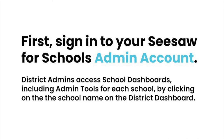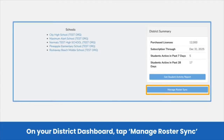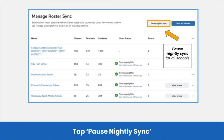Access each school's dashboard by tapping on the school name on your district dashboard. Step 1: Pause your sync district-wide. Pausing your sync in Seesaw ensures your data is not archived or changed before you are ready. Navigate to your Seesaw district dashboard and tap Manage Roster Sync. Tap Pause Nightly Sync to pause the sync between Clever or Classlink and Seesaw. Your sync is paused.